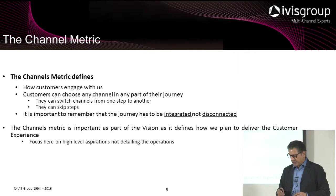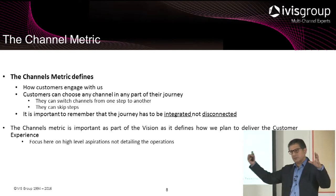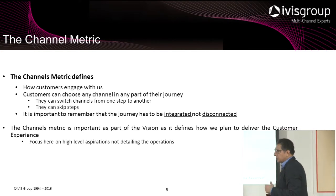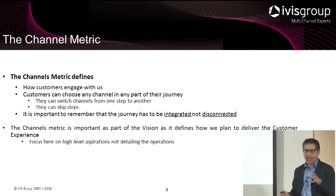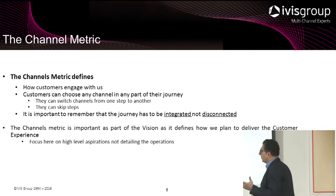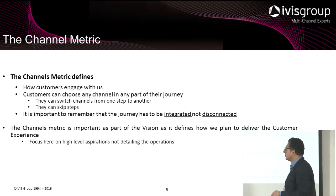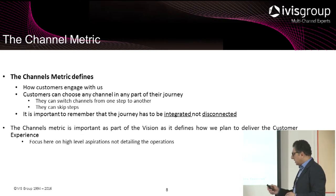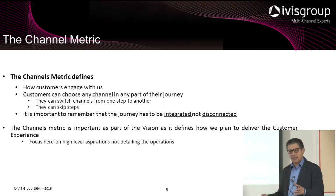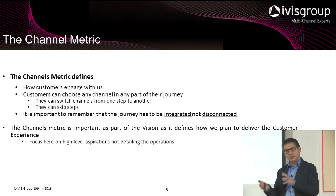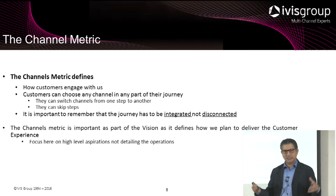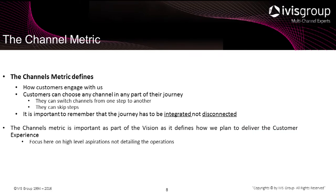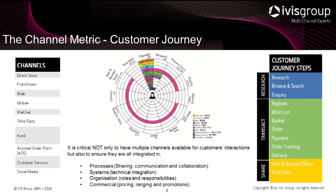The channel strategy is also part of the business goals and vision. It defines how customers engage with us — outlining the customer experience and journey with the brand, what channels they use to interact, and how they can switch from one to another. The key point is that the journey, as shown in the visualization wheel, is fully integrated — not disconnected. Having ten different channels that are completely disconnected from each other defeats the purpose; they all need to work together.